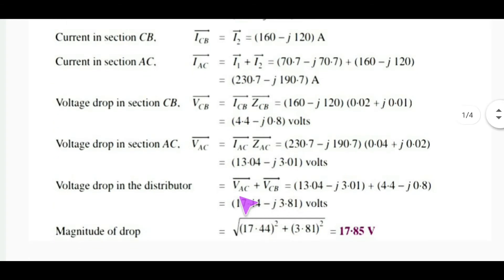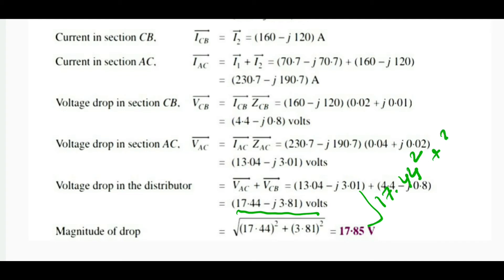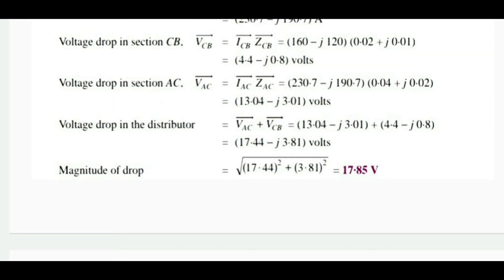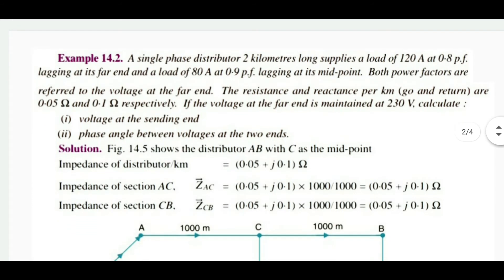The magnitude of the total voltage drop is the root of 17.444² plus 3.81². This gives the magnitude of the pressure drop in the distributor.